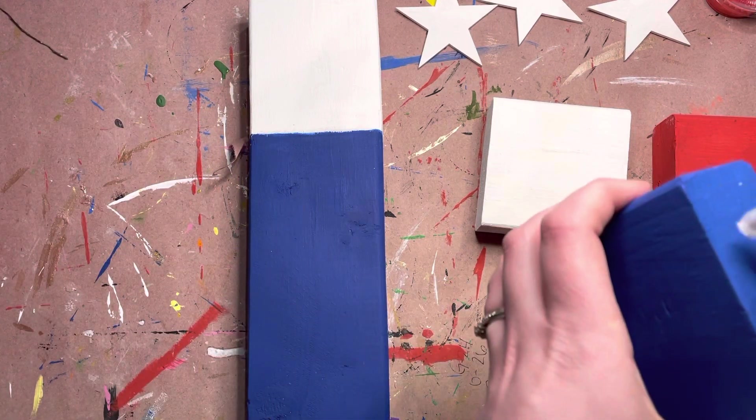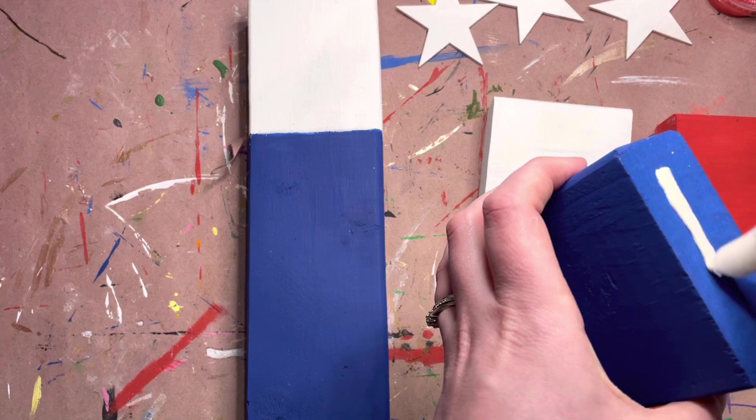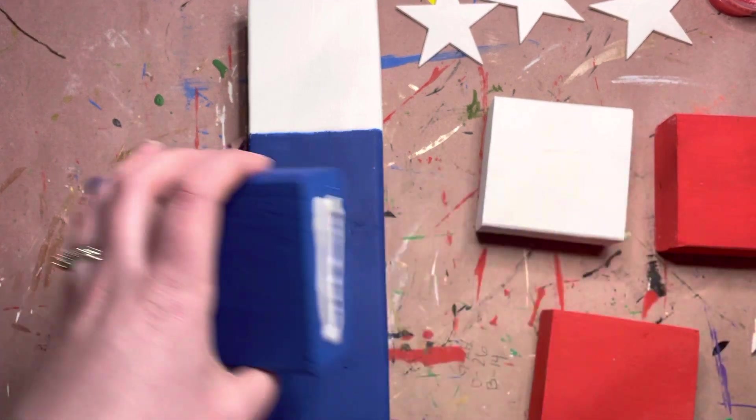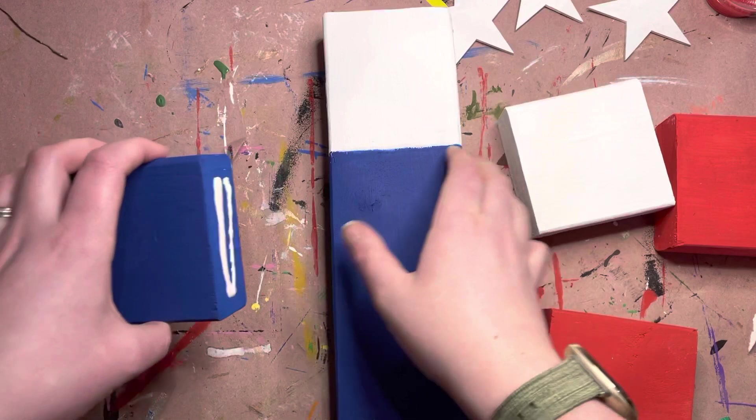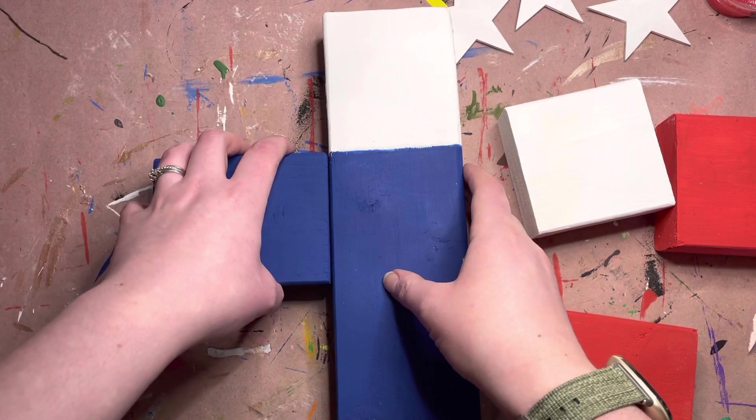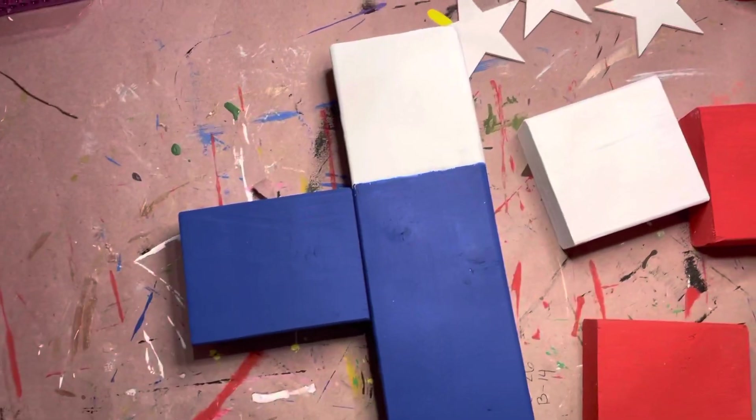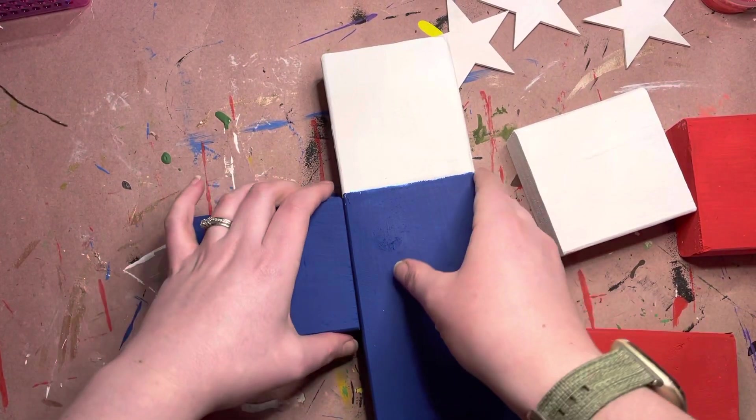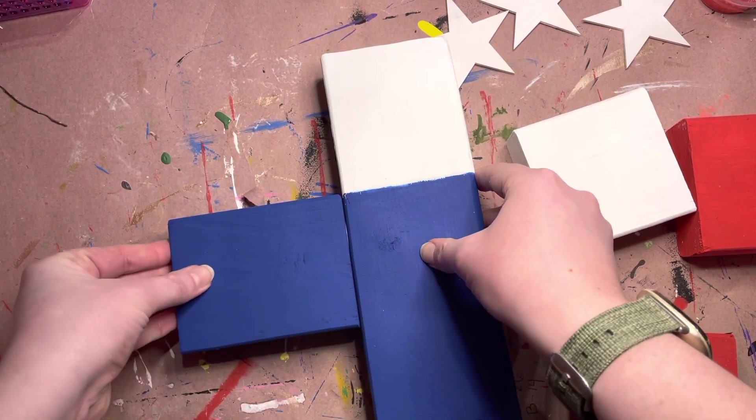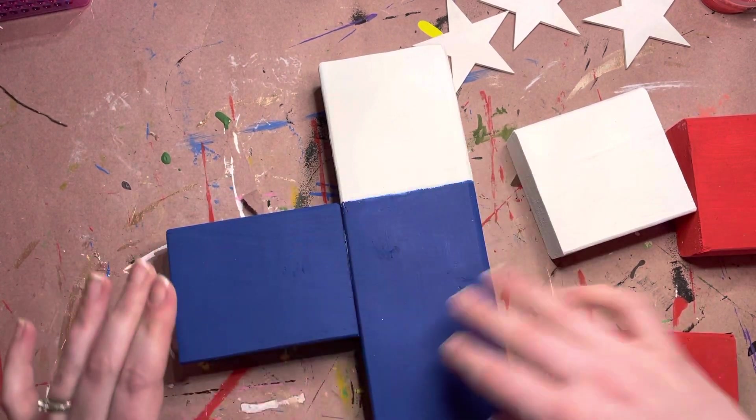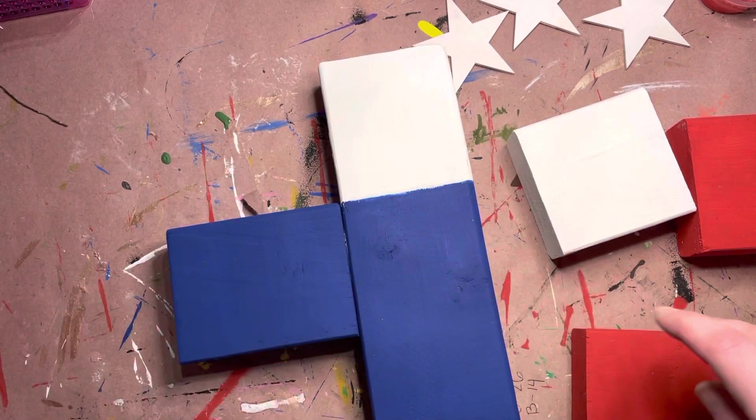So this is a pretty self-explanatory process. You'll just want to make sure, like on this one with the American flag, that you line up your blue one with the edge of your other blue. Because when you put your stars on, this is actually going to be where the stars go. So you want to make sure that it all lines up.